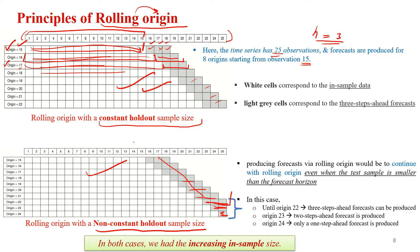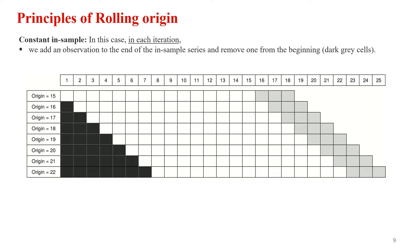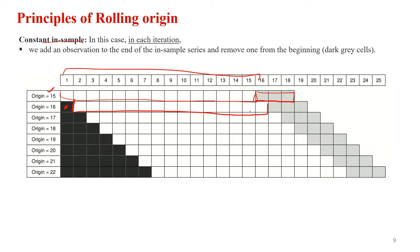The third approach uses a constant in-sample size — every time we use 15 observations to train the model and the remaining data as the forecast horizon. When the origin is 15, we train on observations 1 to 15 and use the next three as the forecast horizon. Then we remove the first observation and train on 2 to 16 — again 15 observations — with the next three as the forecast horizon. When the origin is 17, the first two observations are removed, keeping 15 for training.